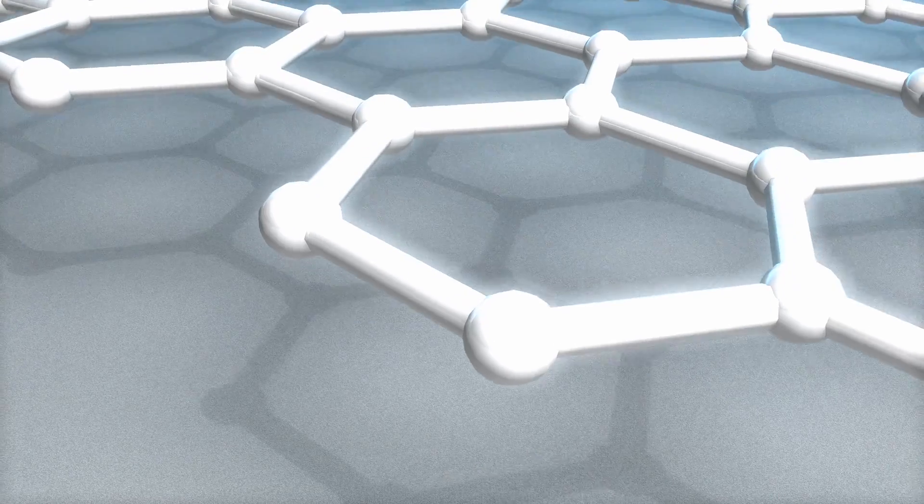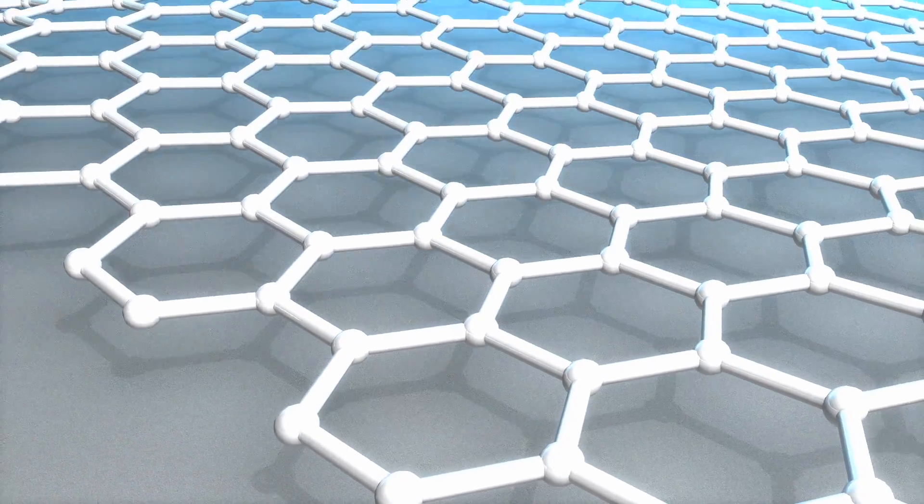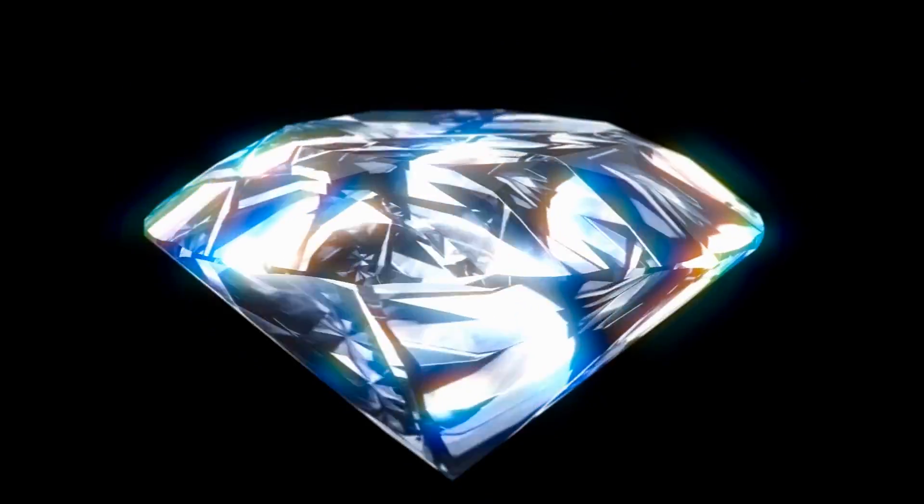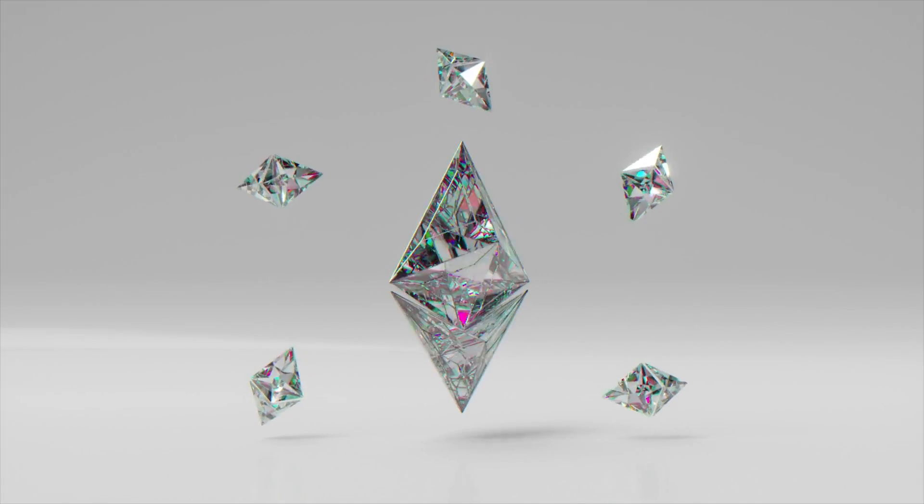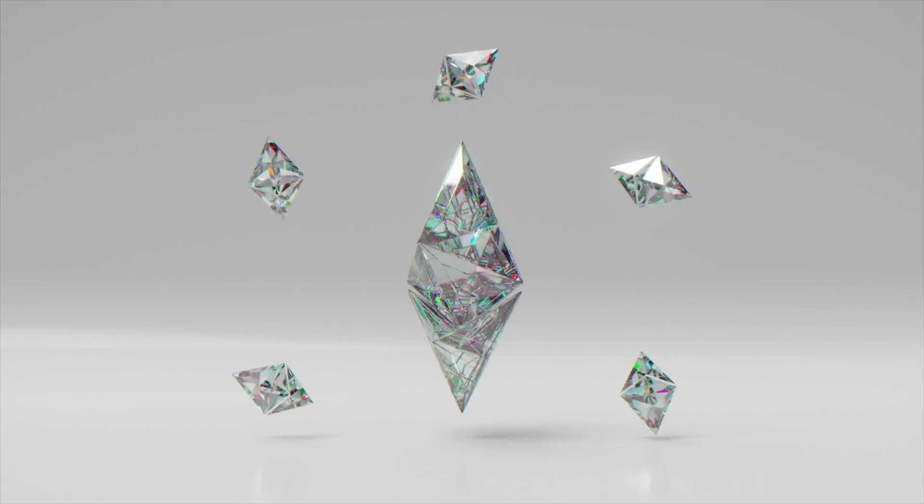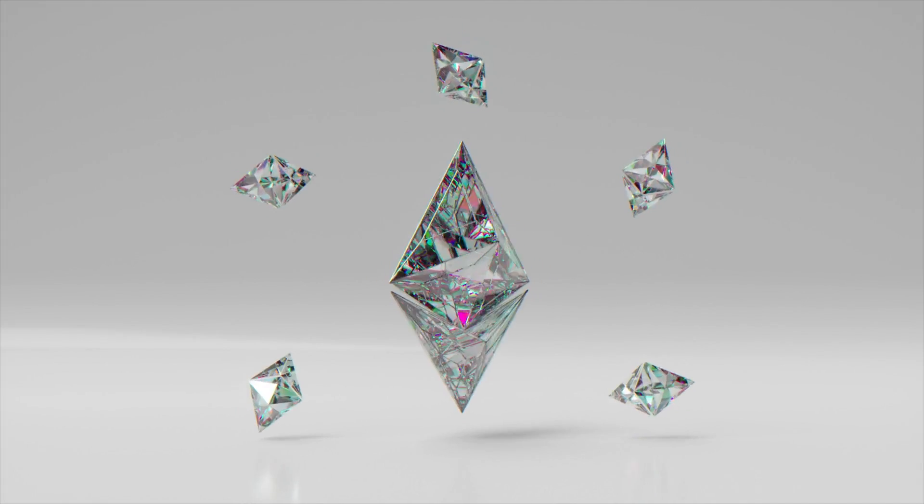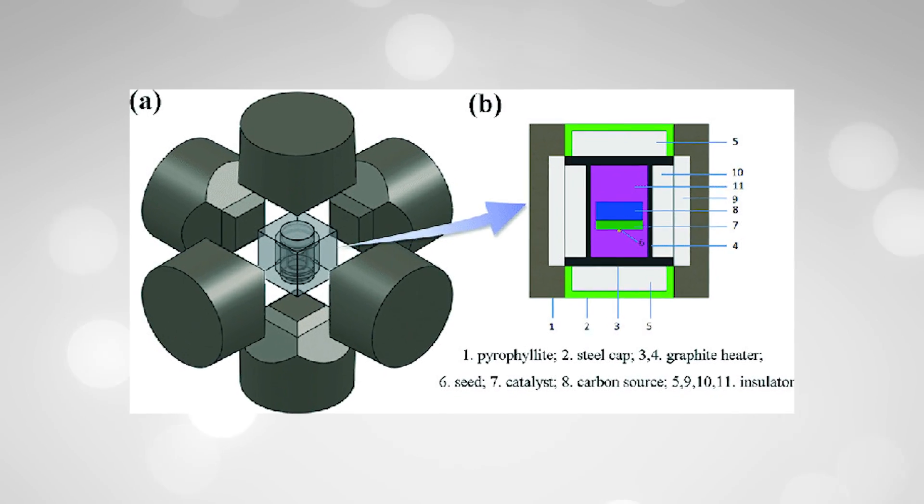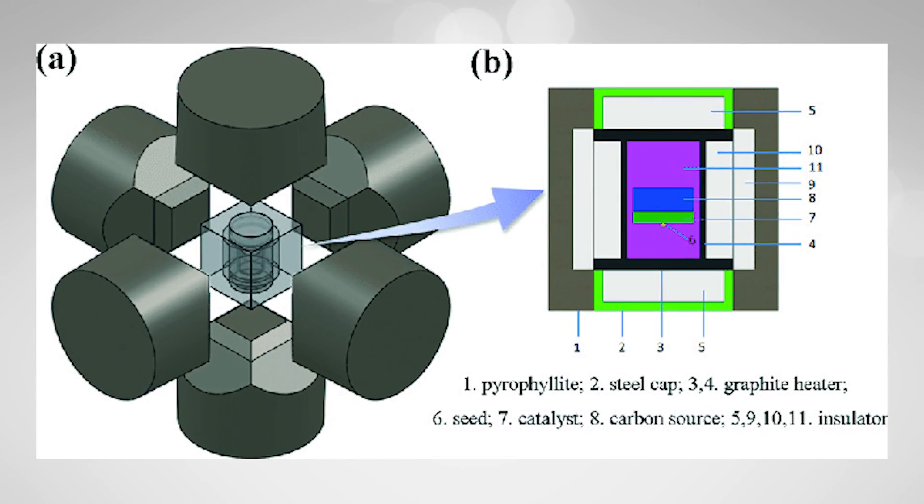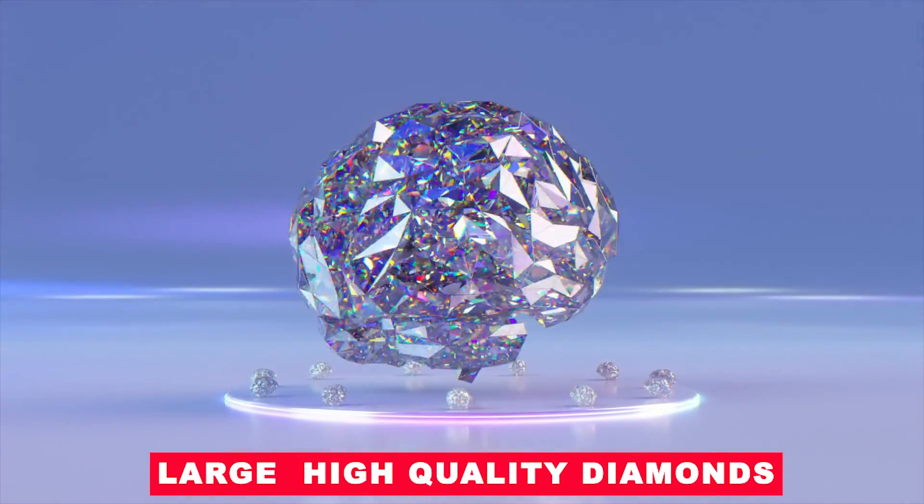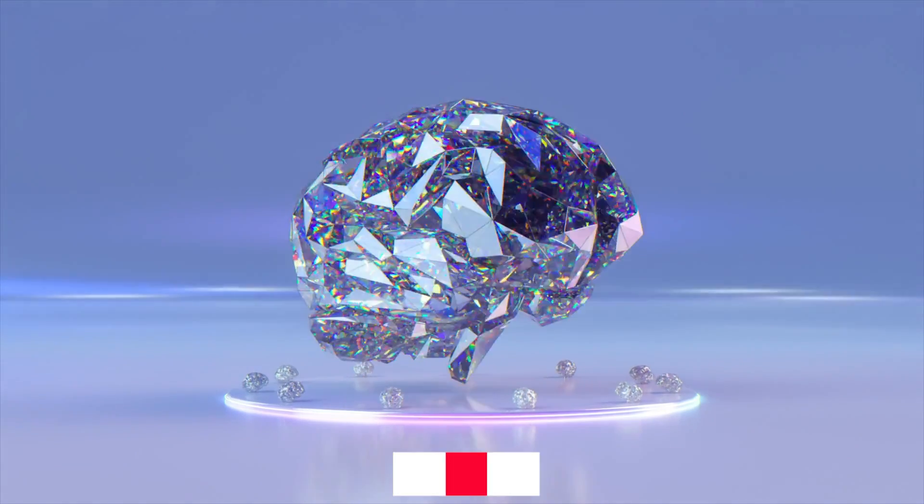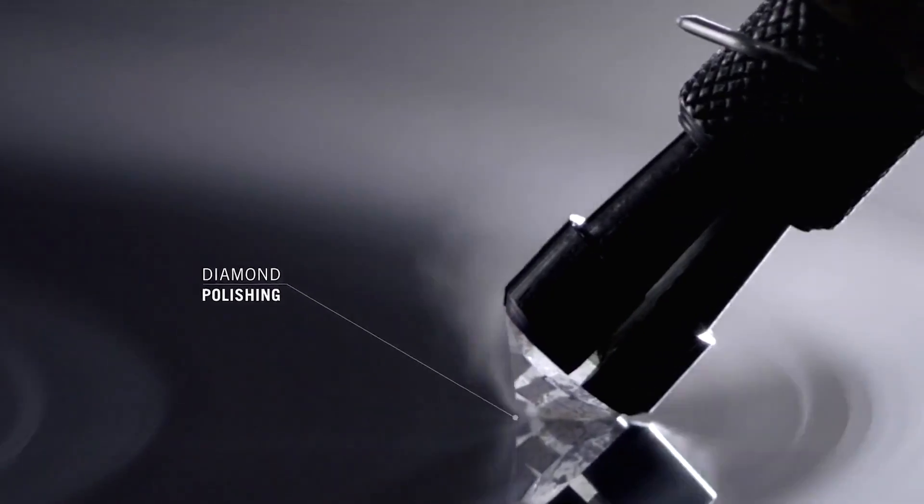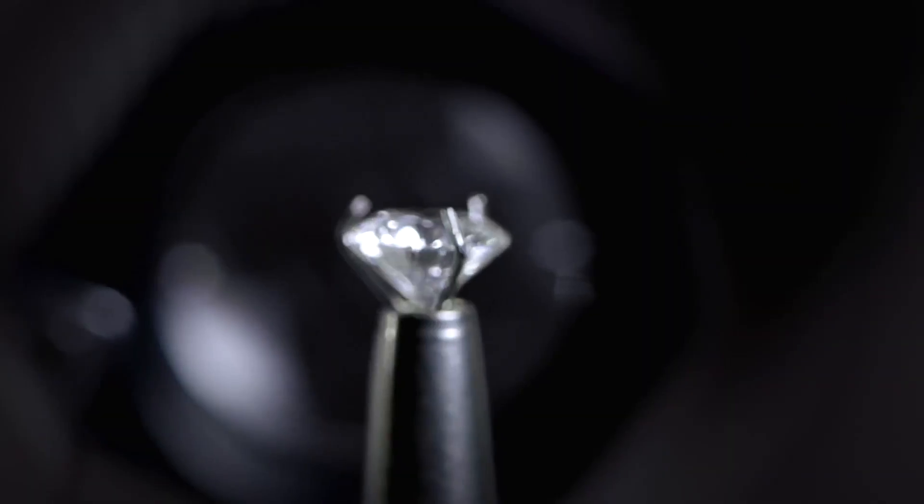Under these conditions, carbon atoms within the press are encouraged to crystallize around the seed, gradually growing it into a larger diamond. The result is a diamond that is remarkably similar to natural diamonds in terms of its structure and properties. One significant advantage of the HPHT method is its ability to create large, high-quality diamonds in a shorter amount of time compared to CVD. This is particularly beneficial for producing diamonds for industrial applications, where size and quality are crucial.